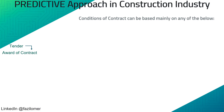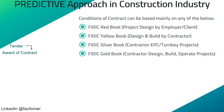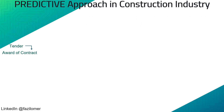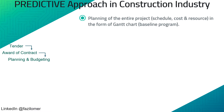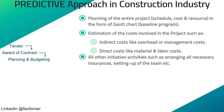Based on the nature of the project, conditions of contract can be based on: FIDIC Red Book for projects where design is done by the client or client representative; FIDIC Yellow Book for projects where both design and build is by the contractor; FIDIC Silver Book for engineering, procurement, and construction projects and turnkey projects; and FIDIC Gold Book for design, build, and operate projects. Schedule, cost, and resource planning of the entire project will be done in the form of a baseline Gantt chart and S-curve, with Primavera and Microsoft Project being the most common planning tools. Estimation of indirect costs like overhead or management costs, direct costs like material and labor costs, and all other initiation activities such as arranging insurances and setting up the team will also be carried out at this stage.